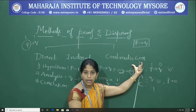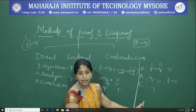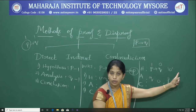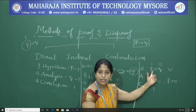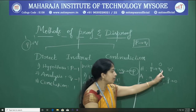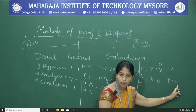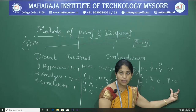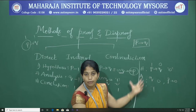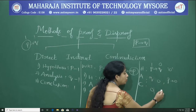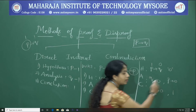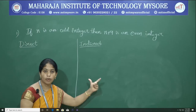The last method is contradiction proof. It has three steps: hypothesis, analysis, and conclusion. In hypothesis, we assume that P conditional Q is false. P conditional Q is false only when P is true and Q is false. Starting with Q is false, we prove that P is also false using rules of inference or laws of logic. This contradicts our assumption that P is true. Since both P is false and Q is false, in conditional 0 conditional 0 is 1, so the given conditional statement will be true.